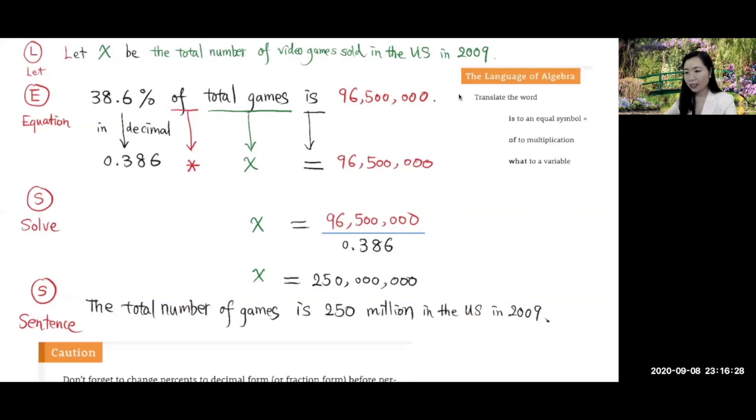So if this is a 10-point problem, the variable will be worth one point. Equation will be worth four points, and that's the hardest part, to set up the equation. Solving it is worth four points. And a complete sentence at the end is worth one point. Total will be 10 points.